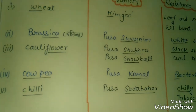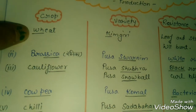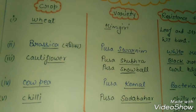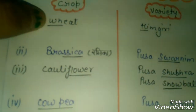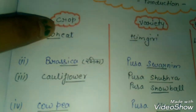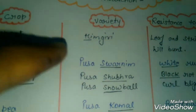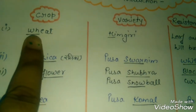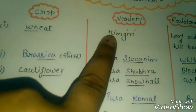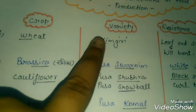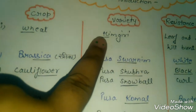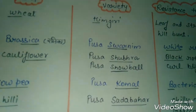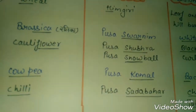Let's start with the first crop: wheat. What is the variety of wheat and how do you remember it? When we write 'wheat', notice W and H. When we look at the variety name, the first letter is also H — so we can remember it. If you are given options, you can easily identify which variety belongs to wheat.